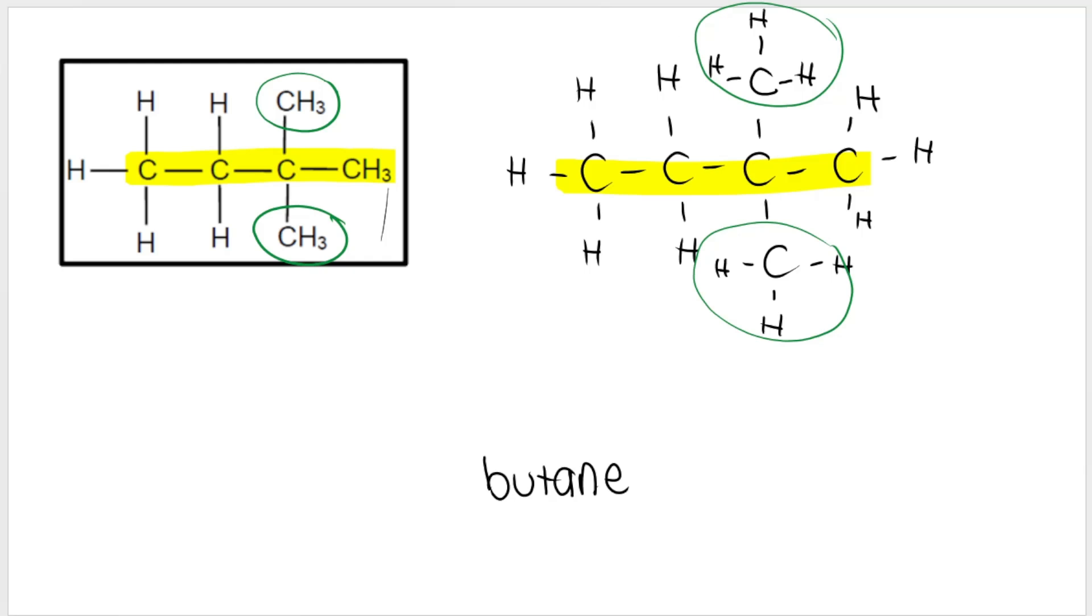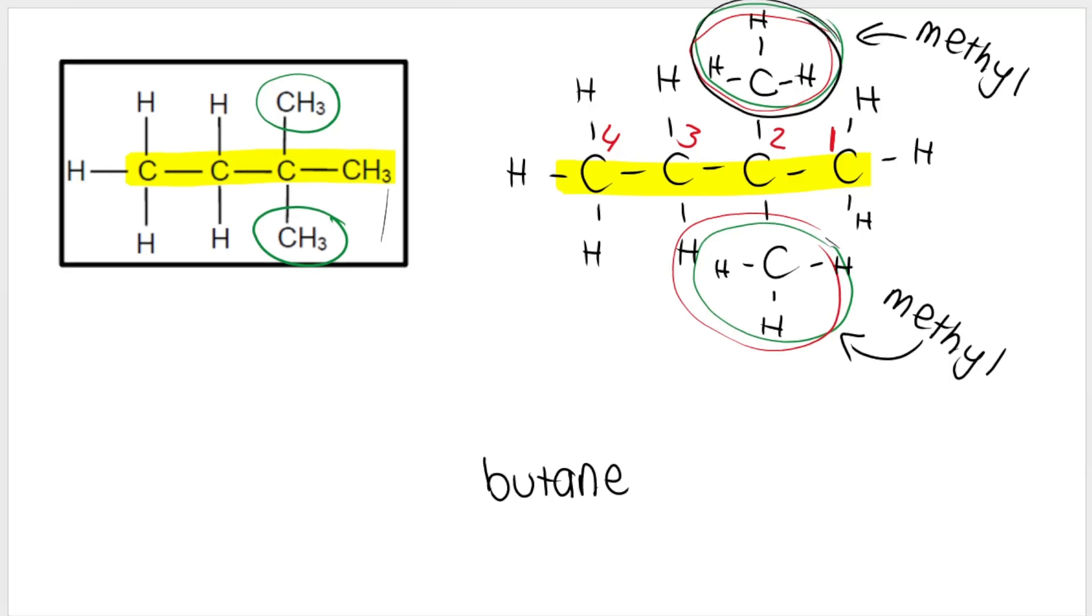Then remember you need to number your main chain so that your substituents, your branches have the lowest possible number. So it doesn't make sense to number it from left to right like I did over there because then my methyl groups will be on carbon three. It makes a lot more sense to number it from right to left, carbon one, two, three, four. In this case, both of my methyl groups are on carbon two. Now remember how it works. If you have two methyl groups, this is a methyl because it's got one carbon in that branch. This is a methyl because it's got one carbon in that branch. I have two of them in this molecule.